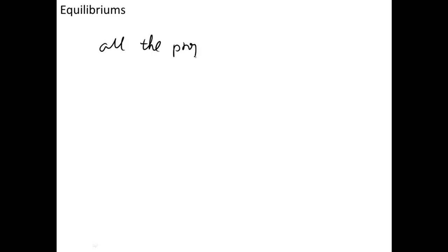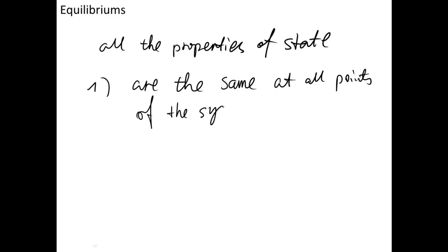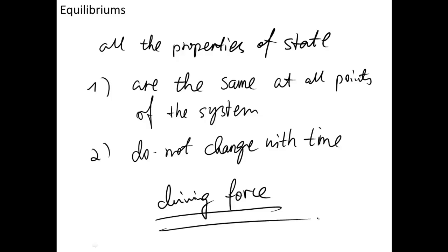After defining the equilibria, we can conclude that a system reaches equilibrium if all the properties of state are the same throughout the whole system — that means they are the same at all points — and do not change with time. Generally speaking, a system is in equilibrium when within the system there is no driving force, such as temperature difference, concentration difference, or other differences in properties.